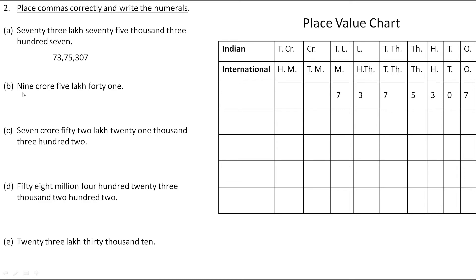The next example is 9 crore 5,41,000. First we put 9 in the crore group. Then comes 5 lakh, so we put 0,5 in the lakh group because there is one more place called 10 lakh which isn't mentioned. Then 41 goes directly into the ones group as no thousands group is included. The remaining places are filled by zeros. So the number is 9 crore 5 lakh and directly 41, with zeros placed where needed.